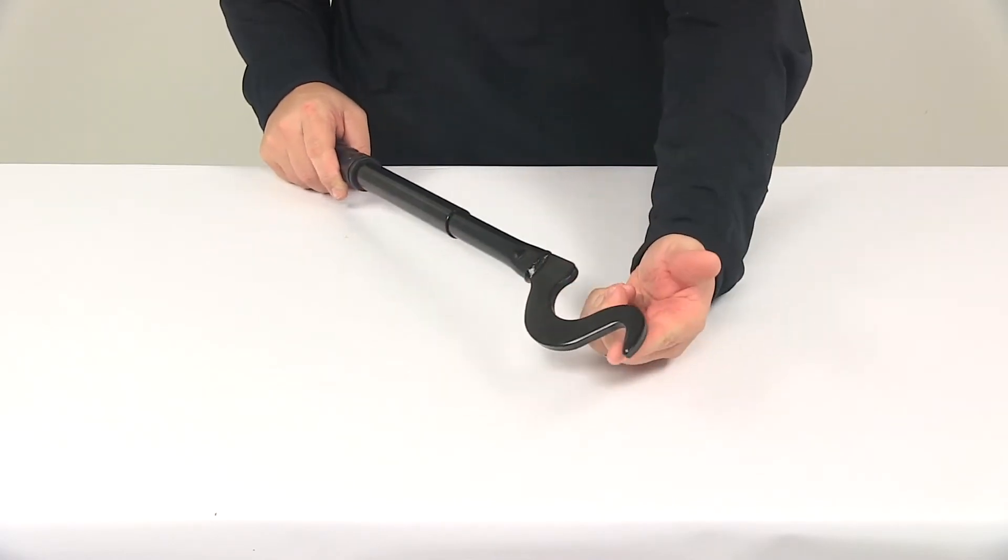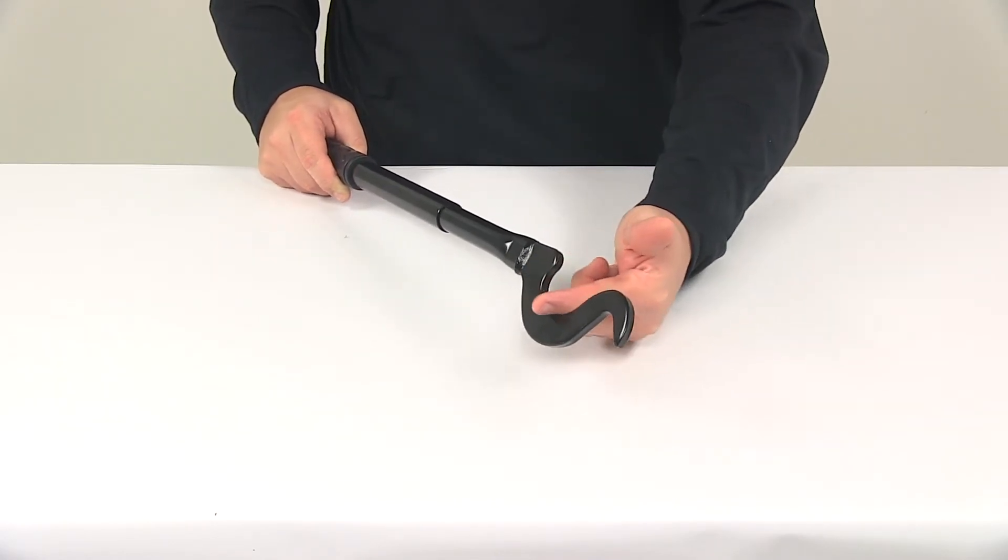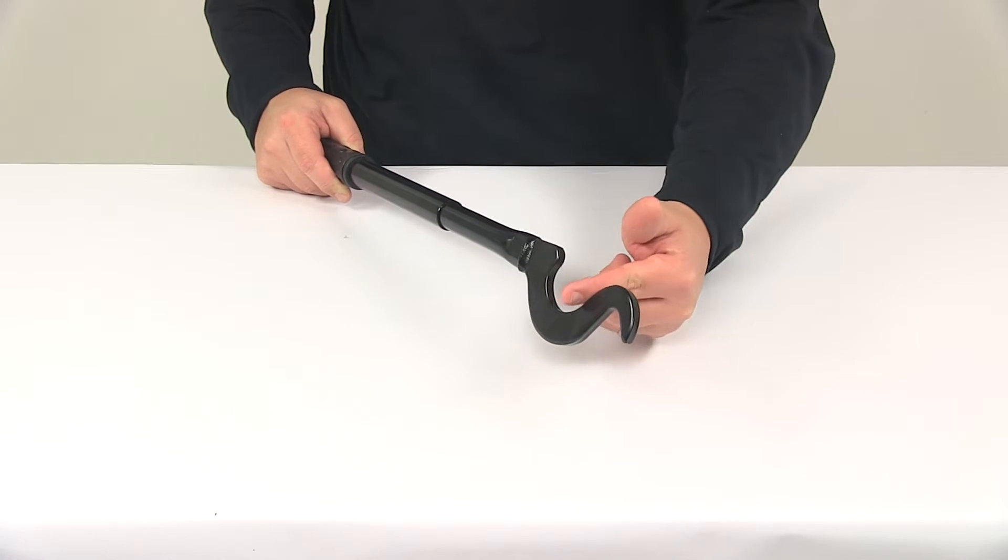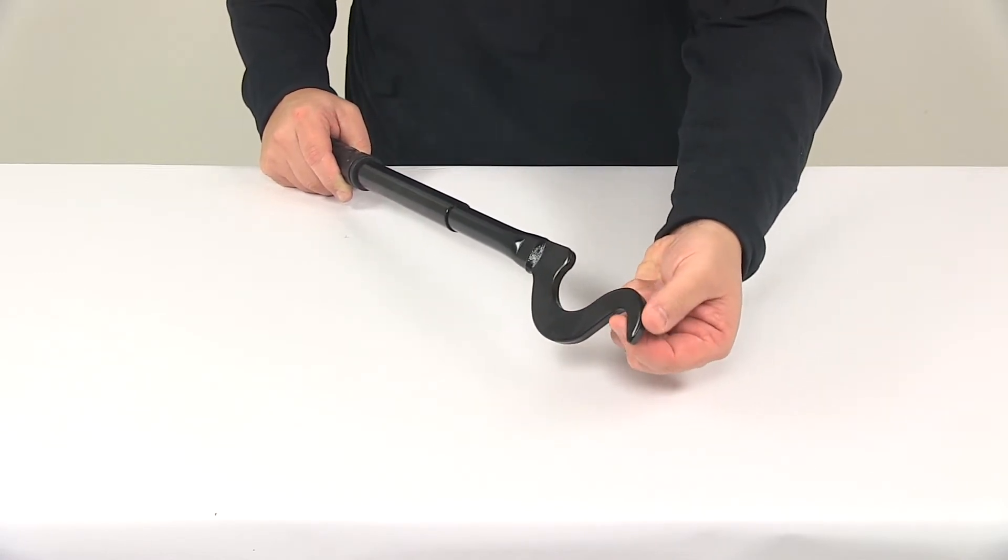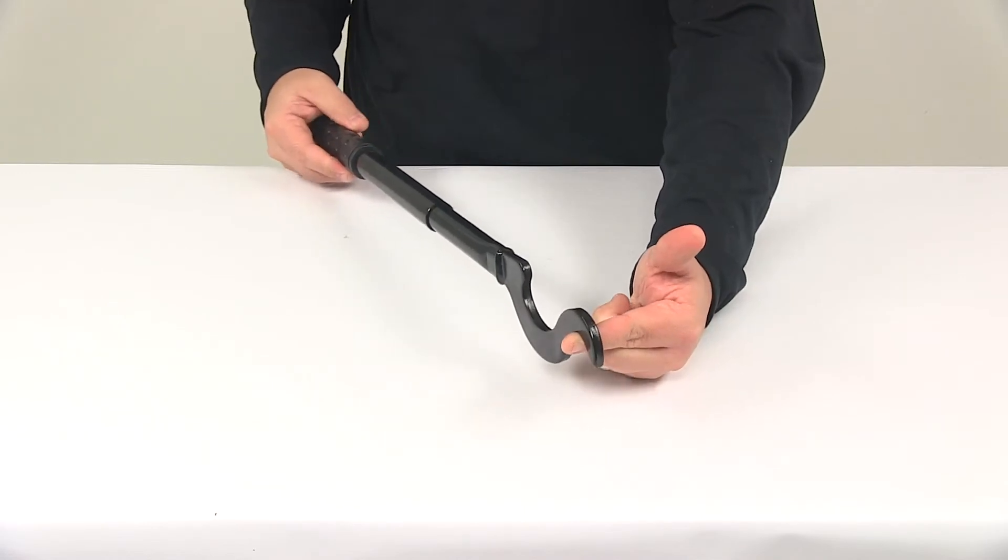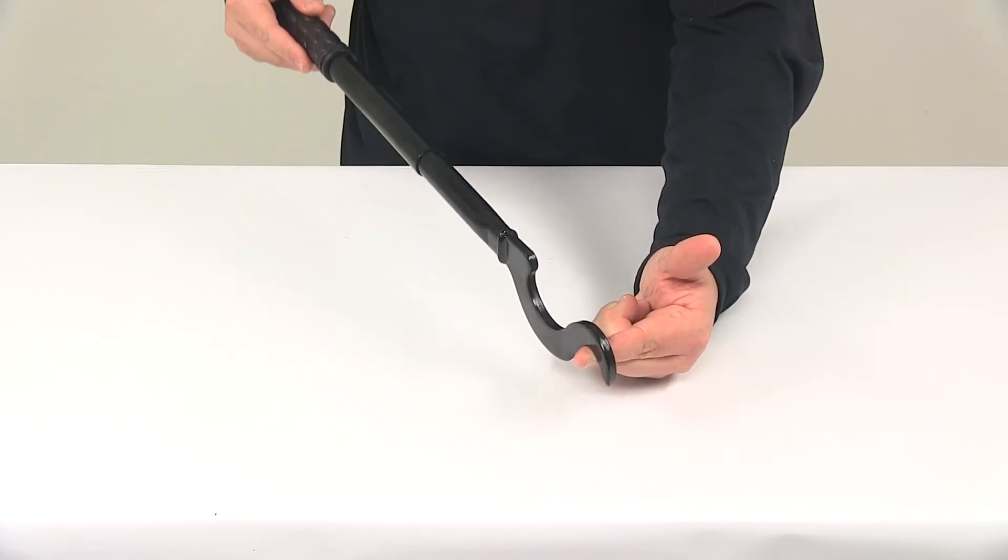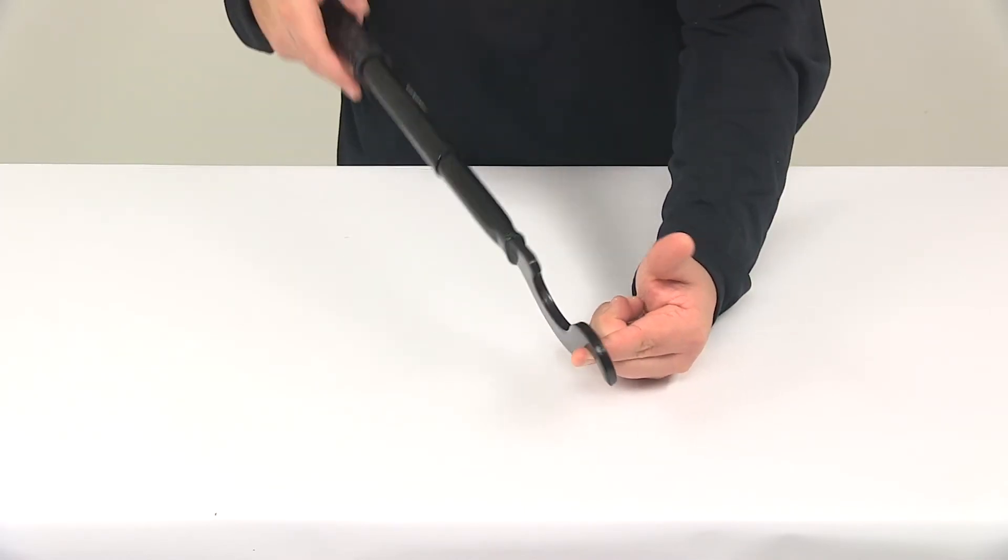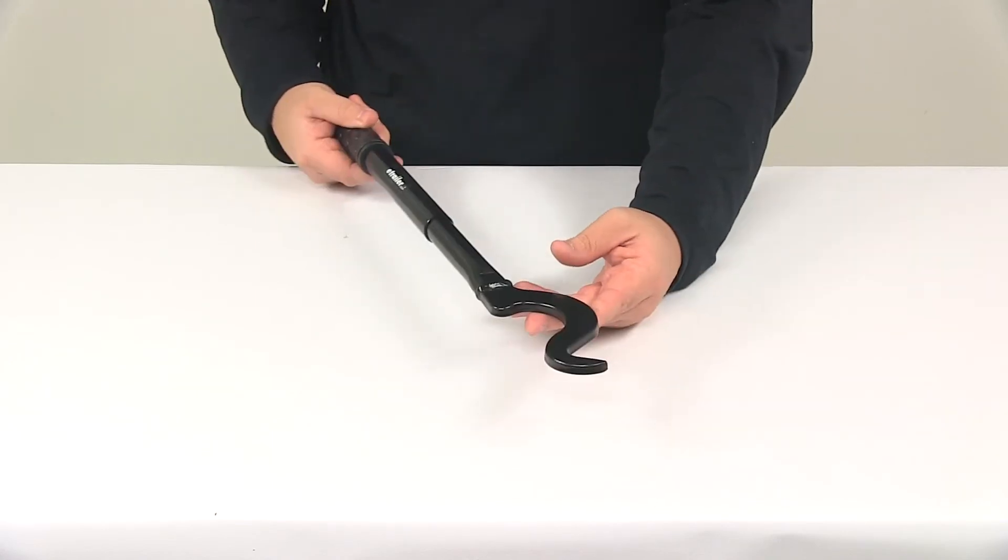When you're ready to use it, this area right here cradles the spring bar of your weight distribution system, and then the hook engages the hole on the sway control brackets. And then all you have to do is use the handle as leverage, you lift it up, and your bar will move into place on the sway control brackets.